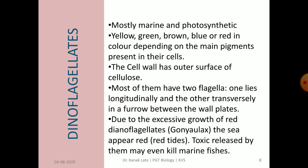The next group of protists is dinoflagellates, meaning members having two flagella. As the name indicates, they are mostly marine and photosynthetic. They are of different colors like yellow, green, brown, blue, or red depending upon the type of pigments present in their cell. Cellulose is present on the outer surface of the cell wall. Most dinoflagellates have two flagella — one lies longitudinally and another transversally in a furrow between the wall plates.